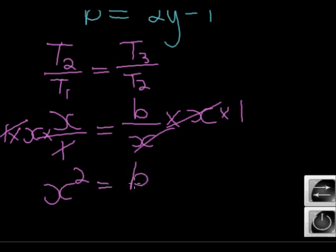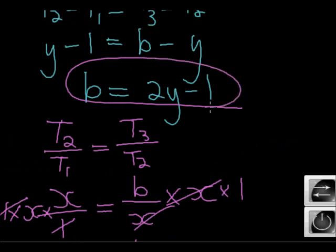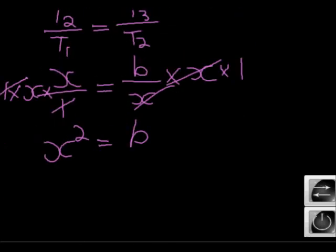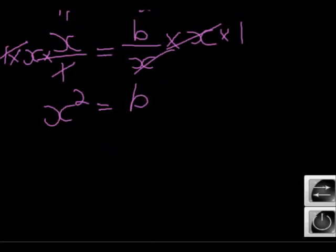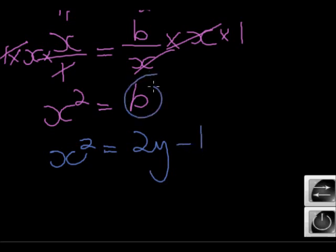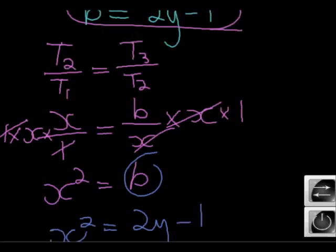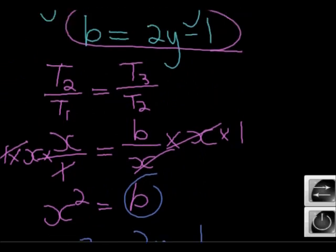Oh, but b was equal to something else. b was equal to 2y minus 1. So next I know that x squared is actually equal to 2y minus 1 because that was what b is equal to. According to this, that is what b is equal to.